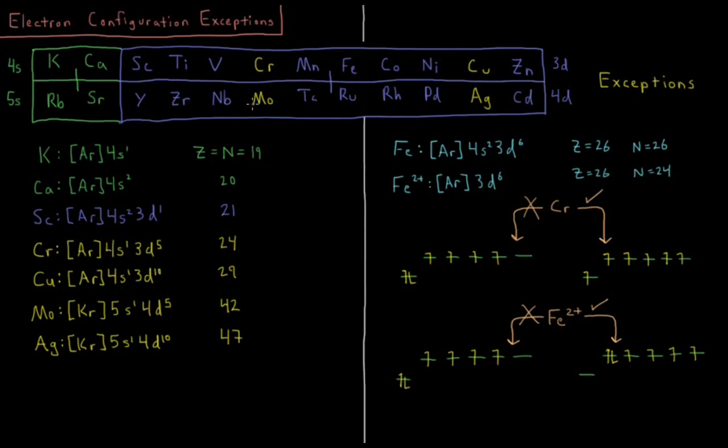This happens again in the 4d block. Molybdenum is krypton-5s1-4d5. We promoted up a 5s electron into the 4d level to get a half-filled 4d subshell. And silver is 5s1-4d10, where we promoted up a 5s electron to give a half-filled s subshell and a completely filled 4d subshell.